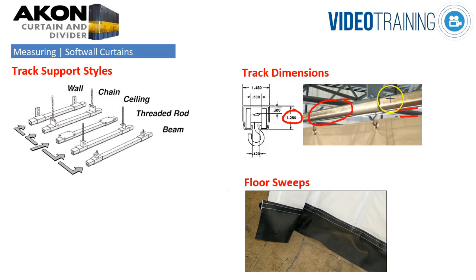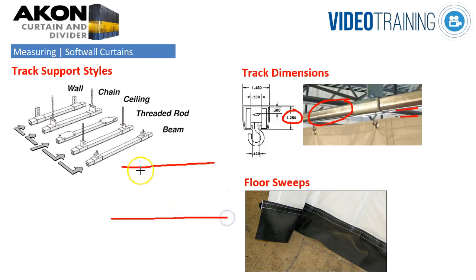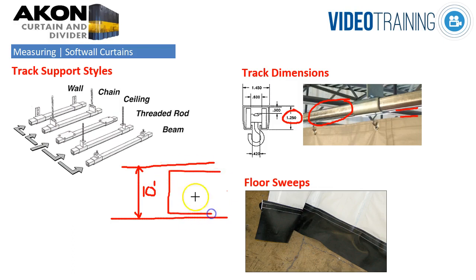The math can get a little complicated, so as a general rule, what you want to do is take the distance from your mounting point to the floor. So if this is where you're going to attach your hardware — let's say this is 10 feet from here to here — you would want to make your curtain size to be 9 feet, 9 inches. We're just taking off 3 inches from the distance from the mounting point to the floor, and that's going to accommodate the hardware and keep the curtain just off of the floor.